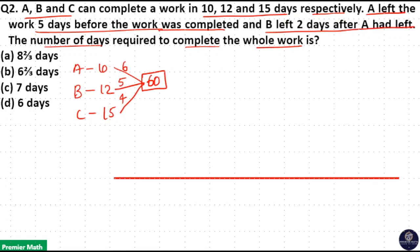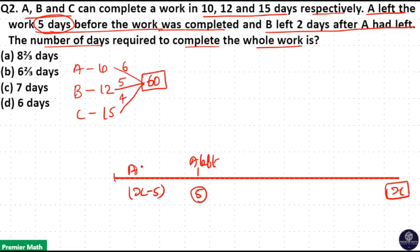The question clearly says that A left 5 days before the work was completed. Let X be the total number of days to complete this work. Then A left 5 days before the work was completed, meaning for X minus 5 days, A, B and C were working together. Then A left, leaving 5 days remaining. But B left 2 days after A had left, meaning after A left, B and C were working together for 2 days.